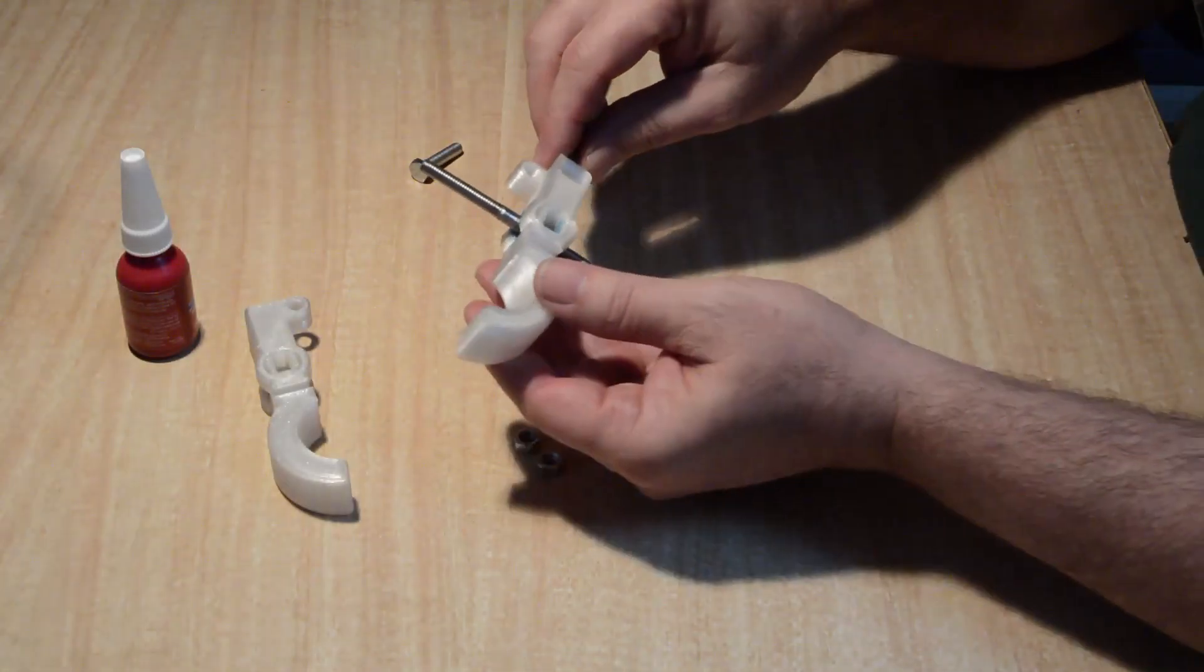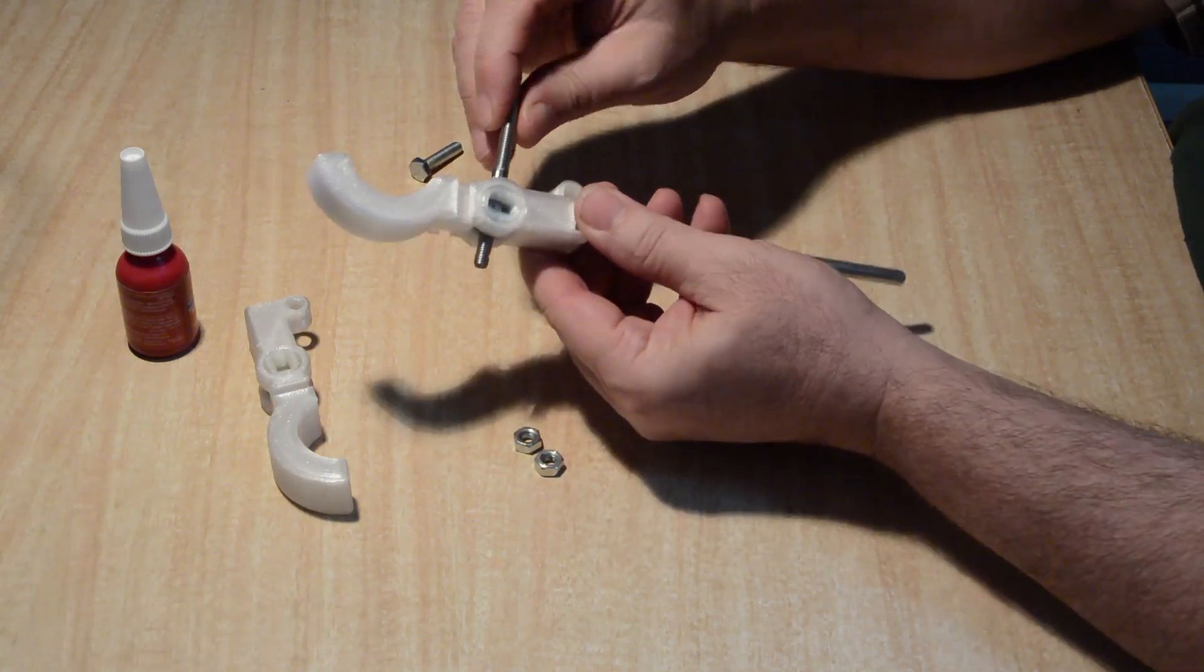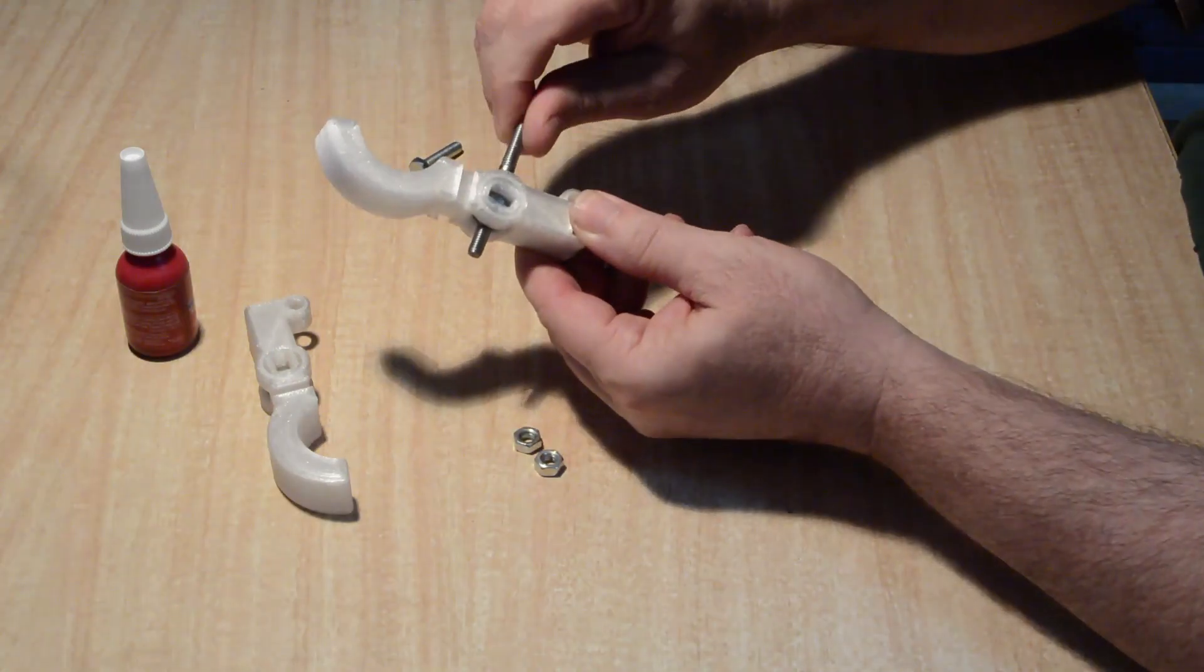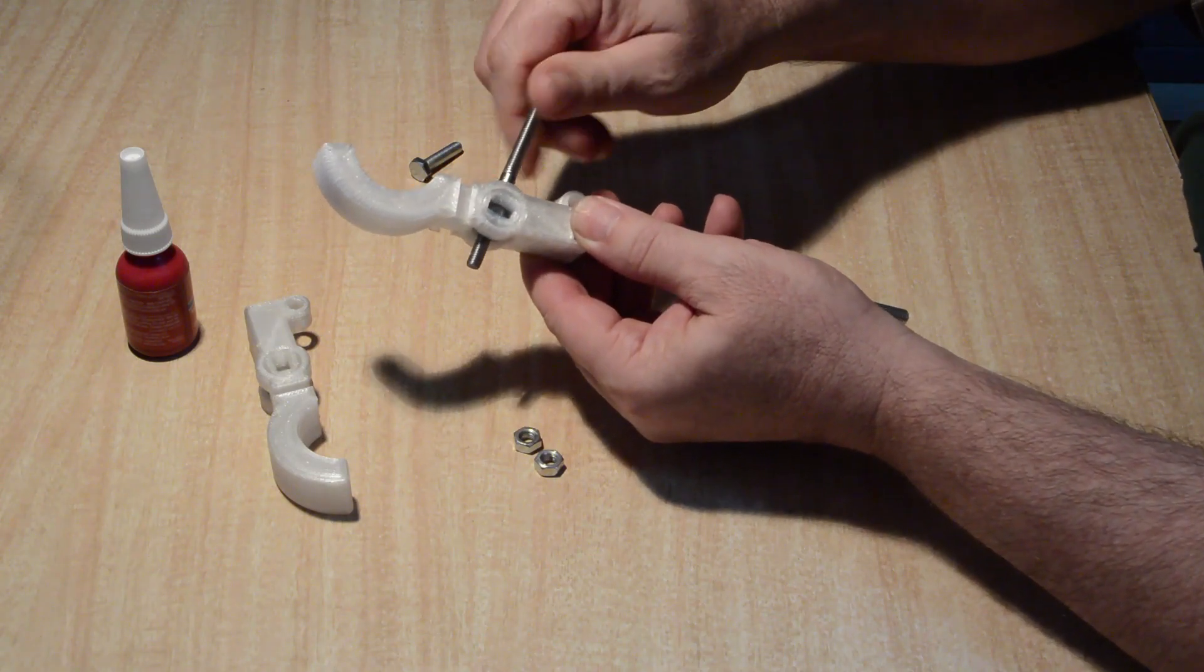Once the glue is set, check that the threaded rod that forms the jaw adjustment screw moves freely, and that the swivel moves back and forth, but the nut should not move up or down the thread. Just spin in place with the threaded rod.